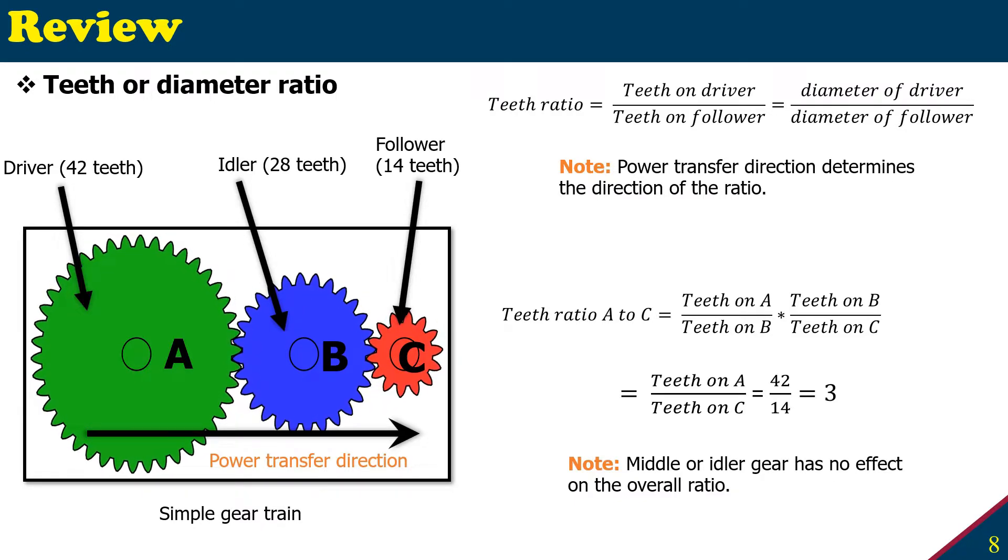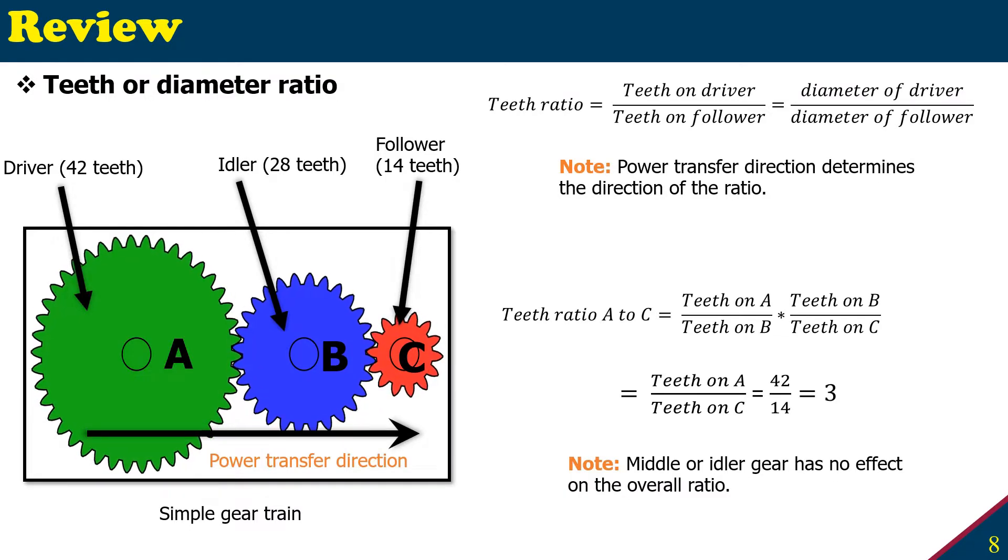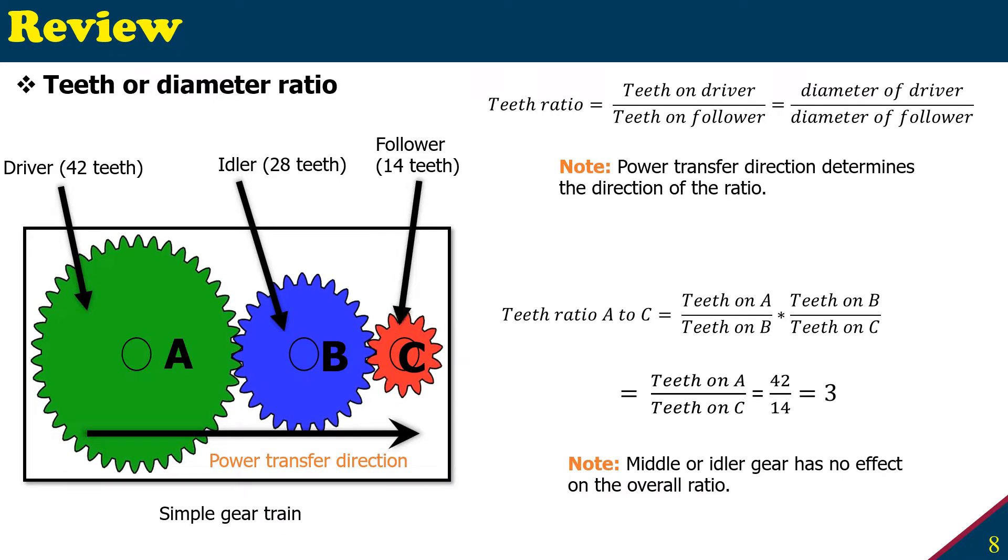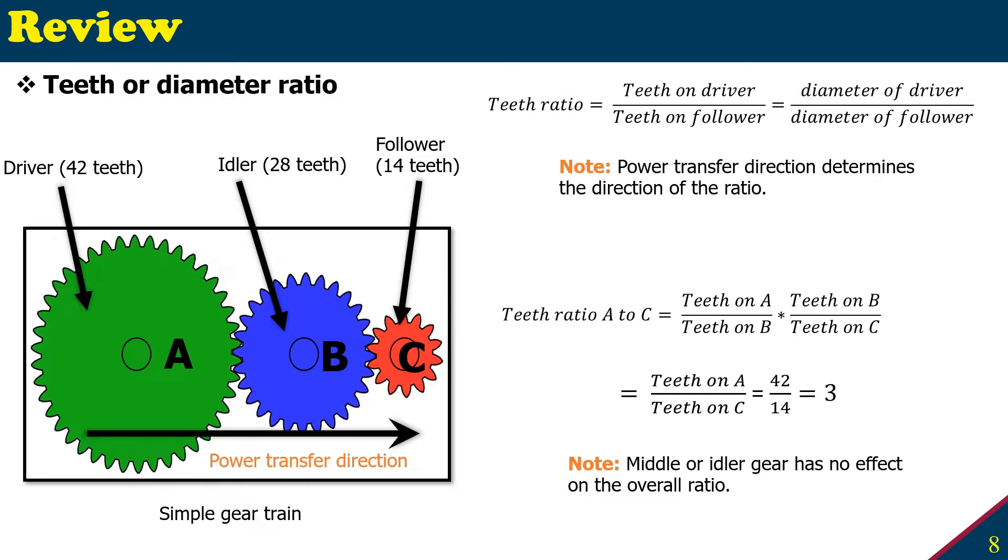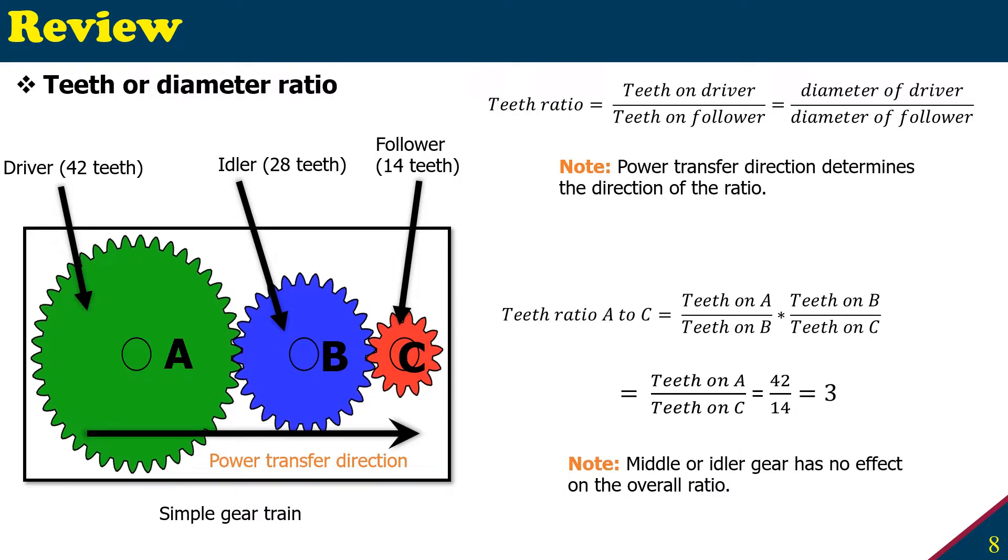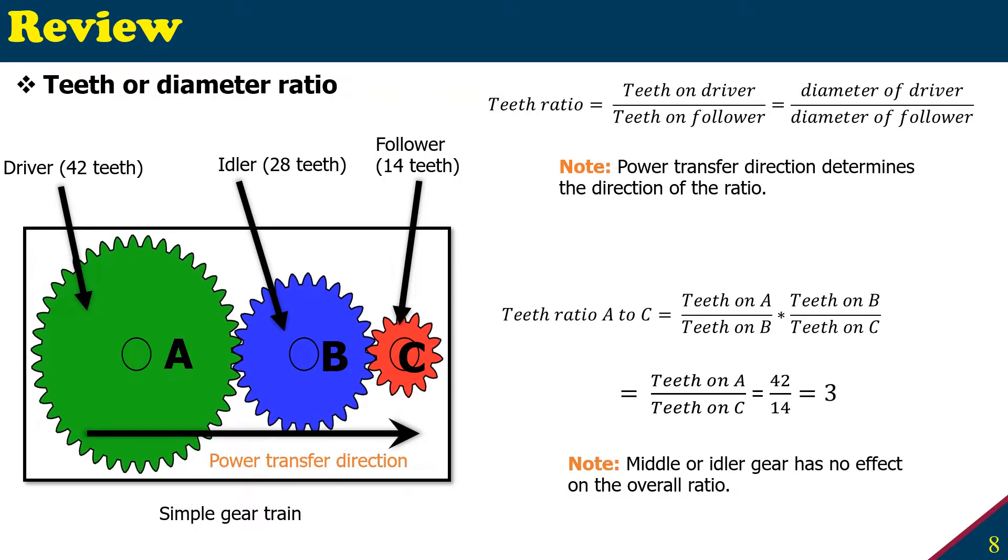Because the number of teeth on the gear depends on the diameter, and since between mating gears the teeth size are the same, so the ratio will be the same. Now to calculate the teeth ratio, we have to first find the power transfer direction to determine the teeth ratio, because if you know the driver and follower, then you can find the teeth ratio.